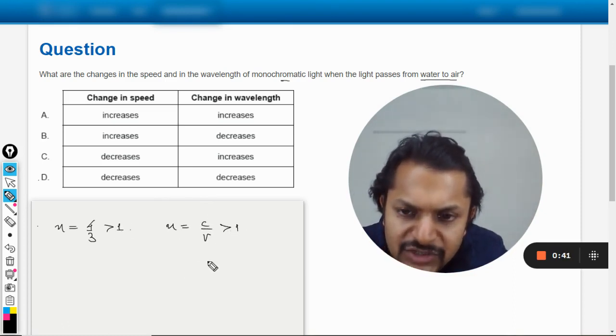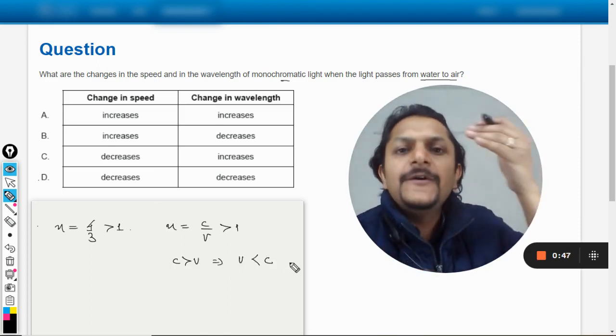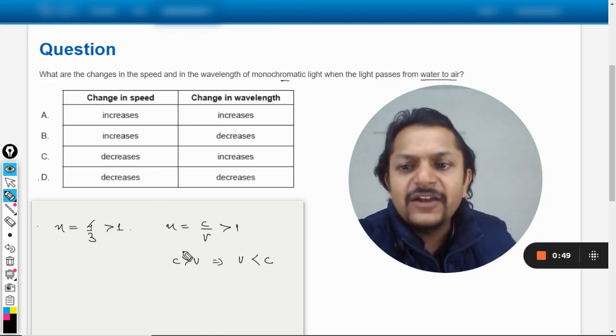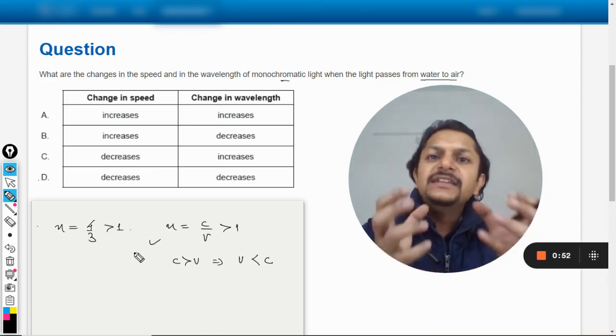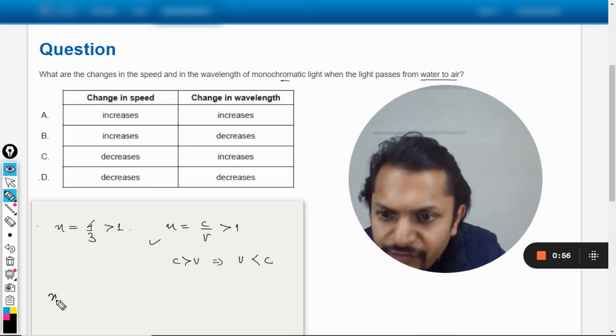Which means that the velocity is lesser than the c. It means that when in water the speed is lesser and when it goes into air, now in the case of air...